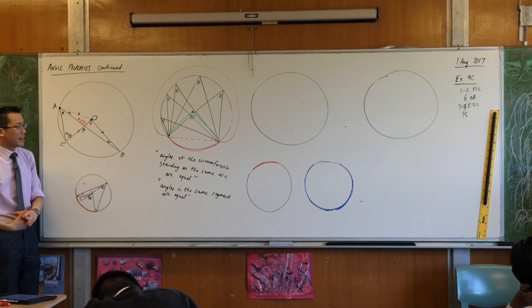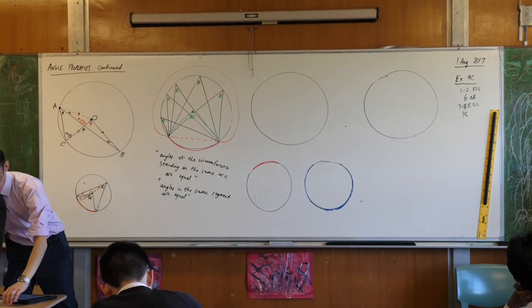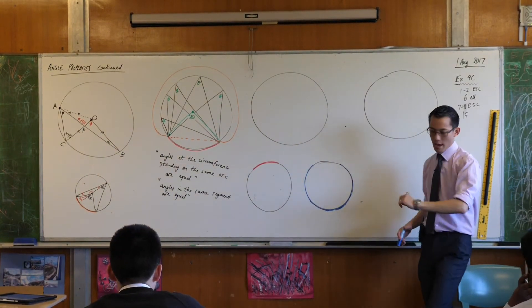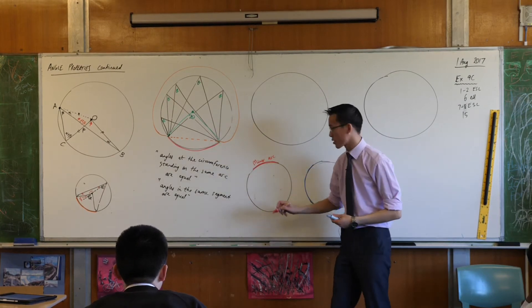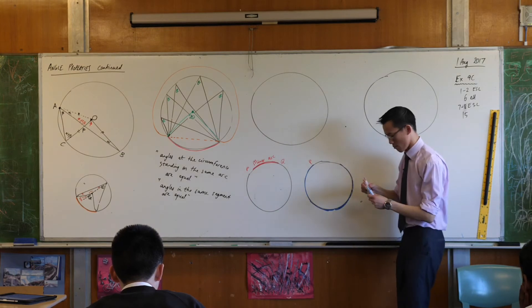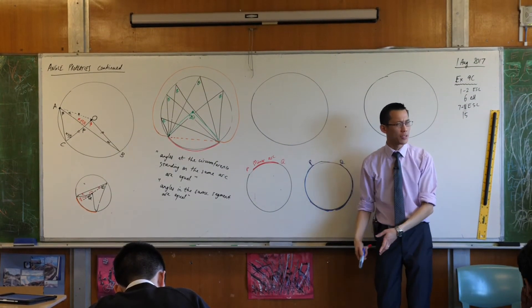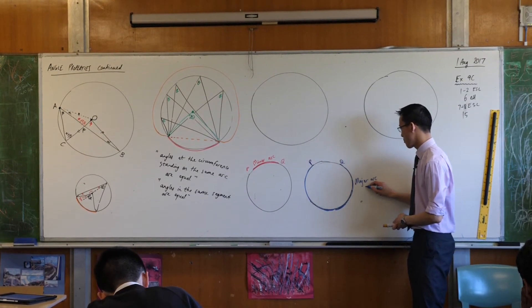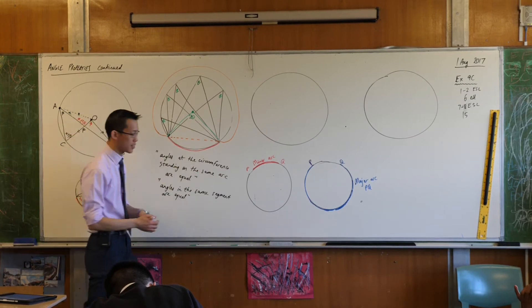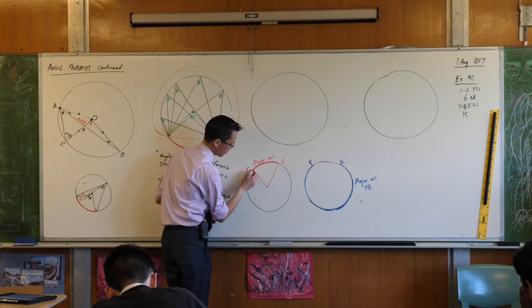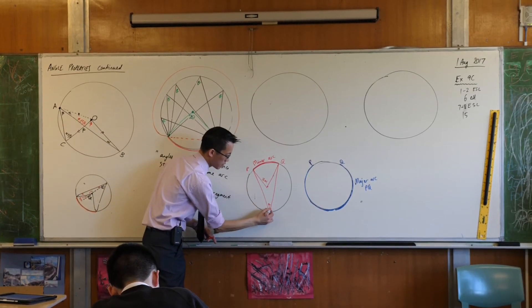Now we're going to prove two more properties, and they both have to do with a shape called a cyclic quadrilateral. Down here I have a couple of small circles with a minor arc and a major arc corresponding to the same two points. For example, if this is P and Q, the arc between P and Q defaults to the short one, but you might want the longer one — the major arc. I'll draw the angle at the center and the angle at the circumference standing on each of these arcs. For the short arc, that's what the angle at the center and angle at the circumference look like.